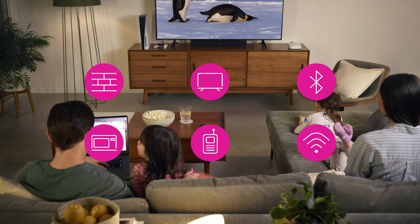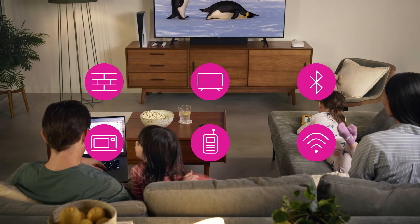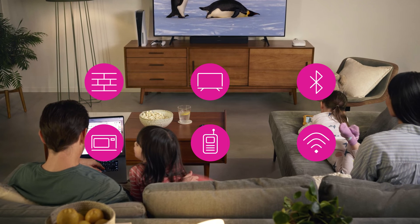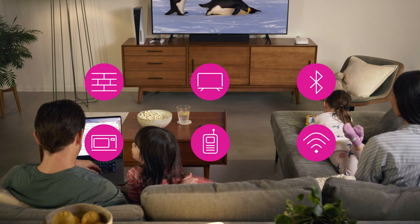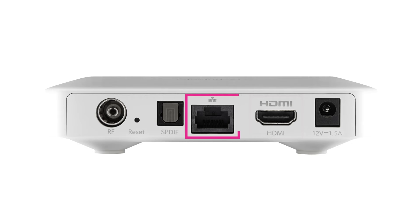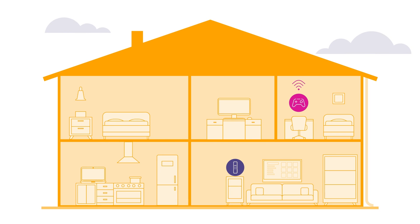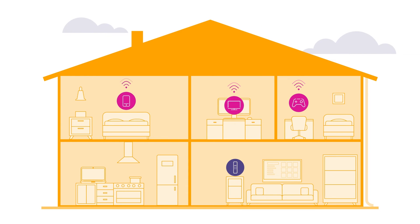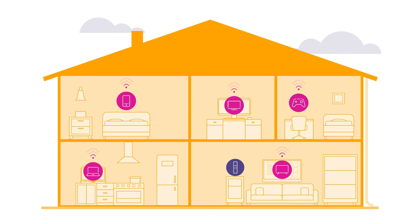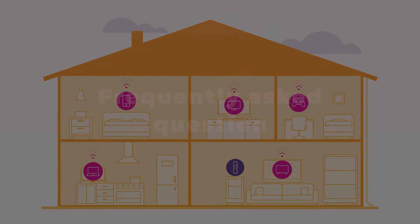Sometimes Wi-Fi interference in your home may cause issues. For a more consistent MaxTV Stream experience, we recommend your media boxes use wired internet connections when possible. If connected by Wi-Fi, you may need a faster internet speed, an additional Wi-Fi device, or to have your gateway moved for a stronger connection. This may require giving us a call.